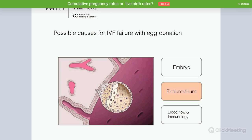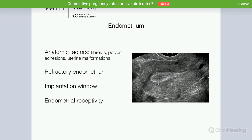Let's move to the next main factor that can contribute to an unsuccessful cycle: the endometrium. We will look at anatomic factors that might interfere with receptivity, the concept of refractory endometrium and what we can do to address it, the implantation window and its importance in success rates, and the endometrial receptivity test.